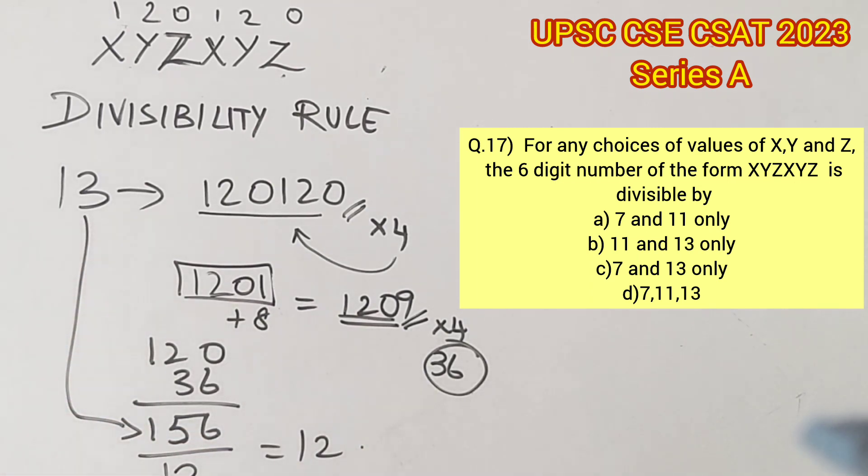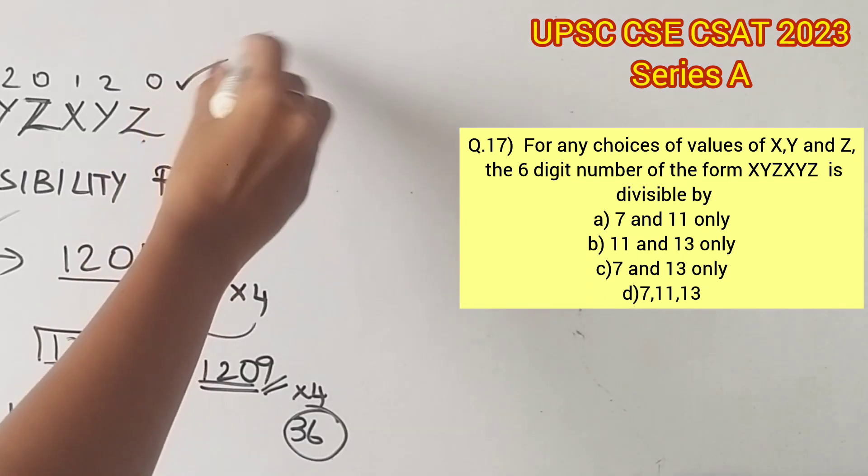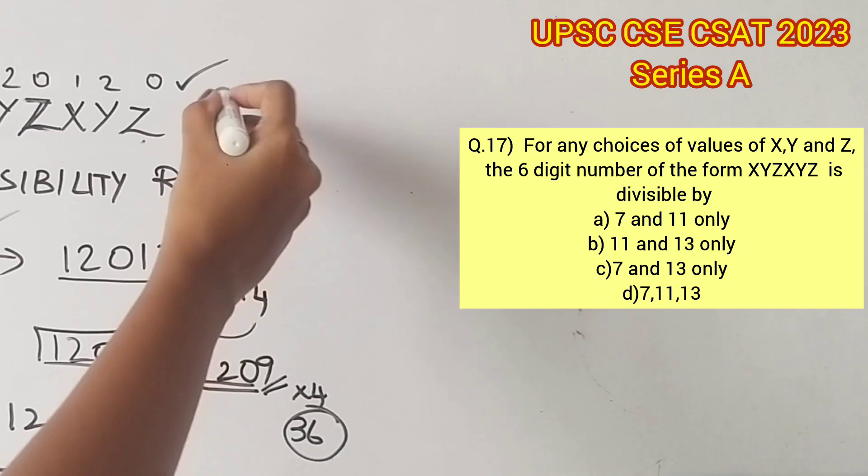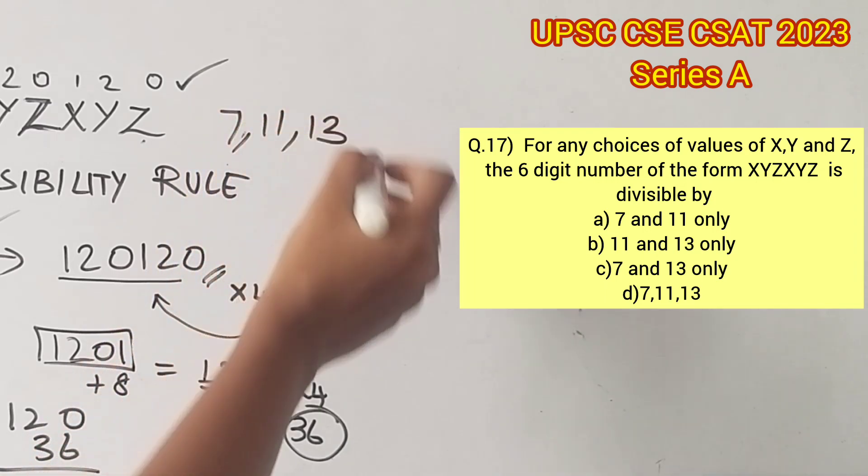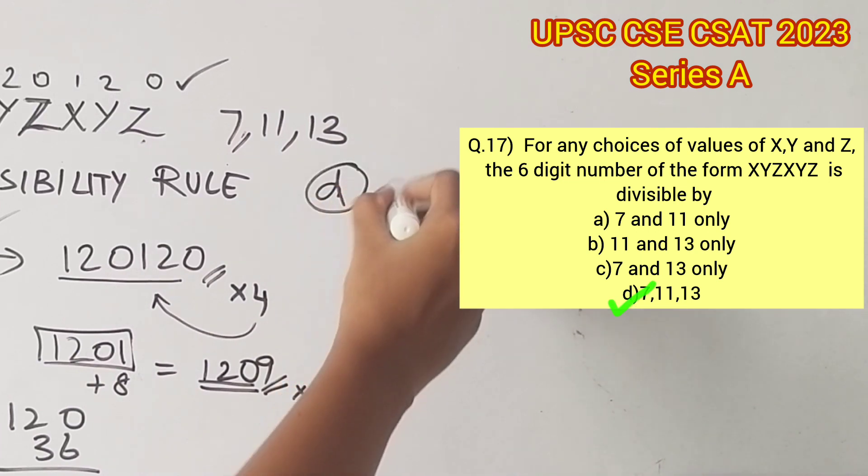With this, we can conclude that 120120 is divisible by 13, and hence XYZXYZ is also divisible by 13. Because for any values of X, Y, and Z, you'll get a value that is divisible by 13, 11, and 7. So option D is the right answer.